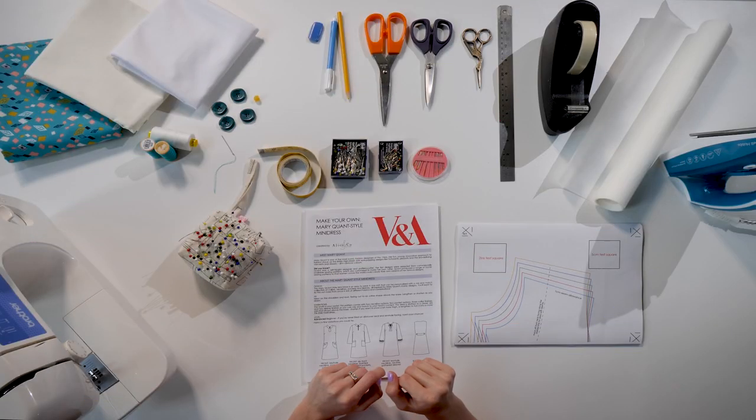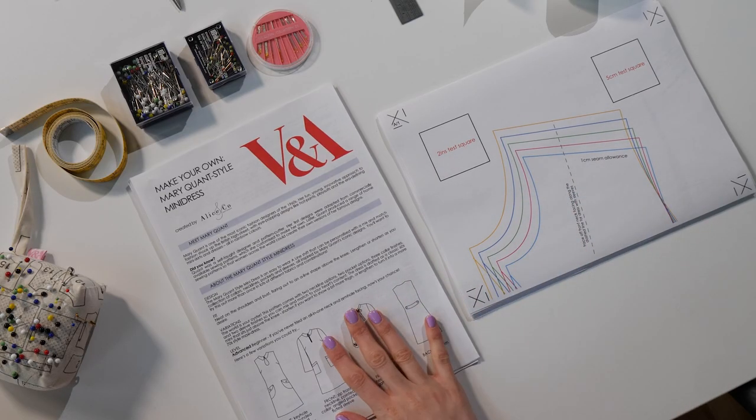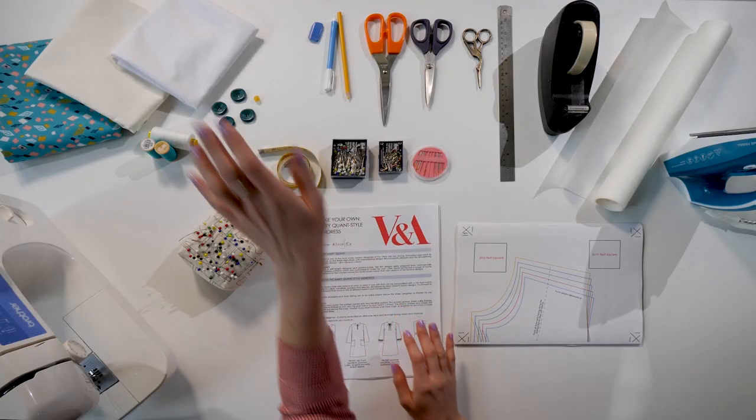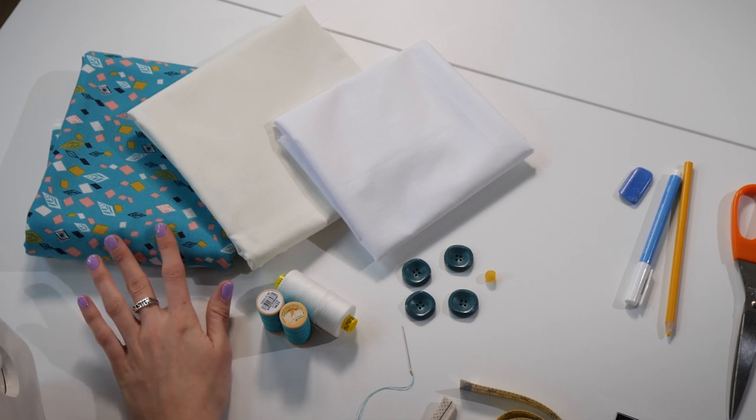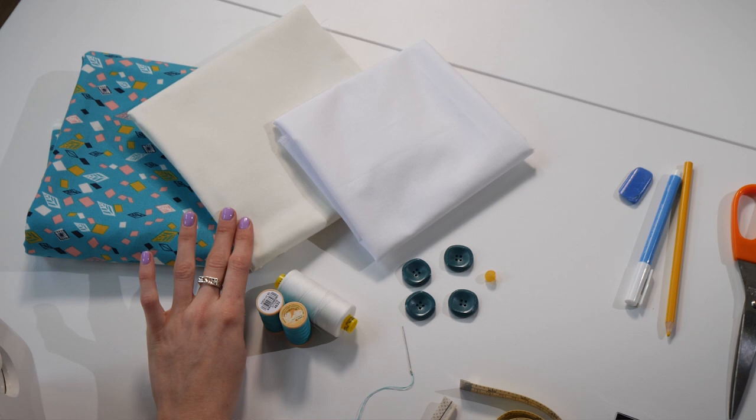So here we have everything that you're going to need to make your dress. Your paper pattern and your instructions from the V&A website. I'm making mine in a lovely bright 60s style print for the main body of the dress. A nice easy to use quilting cotton and then I'm going to use the white for a contrast collar and pocket detail.